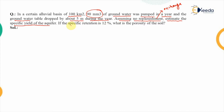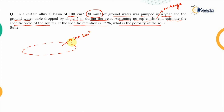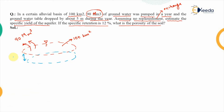Another piece of information is given: if the specific retention is 12%, what is the porosity of the soil? The aerial extent of the basin is 100 square kilometers. The volume of water taken out is 90 million cubic meters. Because of this pumping, the groundwater table dropped by 5 meters during the year.